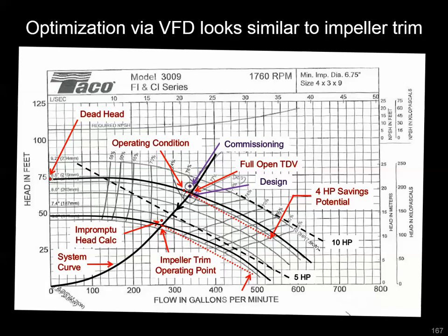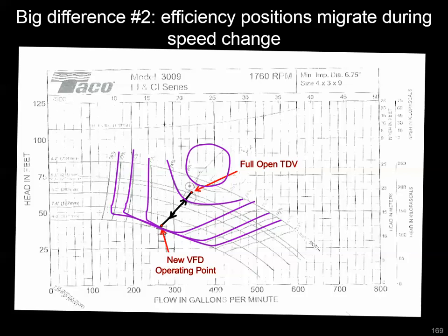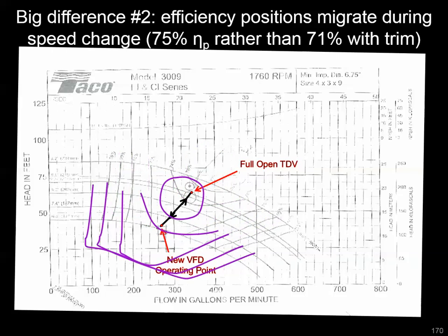On the pump curve, the VFD optimization opportunity looks very similar to the impeller trim. There are two big differences to note. One is that it's reversible — or easily reversible. With the pump impeller trim, once you trim that impeller it's pretty difficult to go back; you'd have to open the pump, buy a new impeller, and install it. But with a VFD, you have very easy reversible speed changes. Even if you're just trimming to a new constant reduced speed, if you ever need a design change or want to course-correct to a higher speed, you can accommodate that easily. The other big difference is that because you're not changing the impeller size — not increasing the gap between the tip of the impeller and the volute casing — you actually take those lines of efficiency with you. Wherever you operated at the initial condition, you still have that proximity to the peak efficiency at the new VFD operating point.